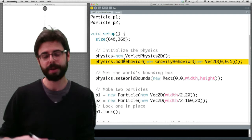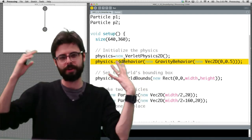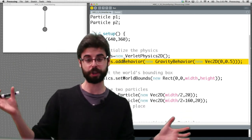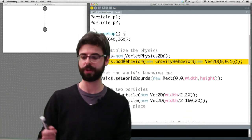but one of the things we can add to our verlet physics world is a kind of global force that points in a given direction. In this case, we have that force point down so that it looks like 2d gravity on the screen.